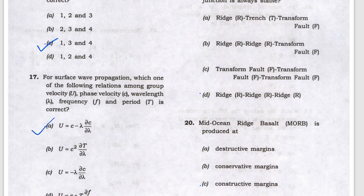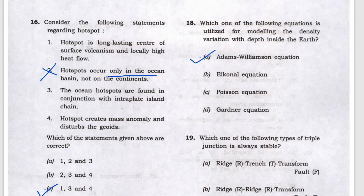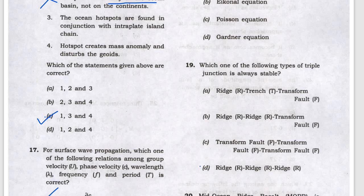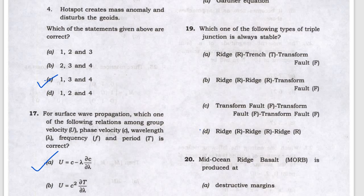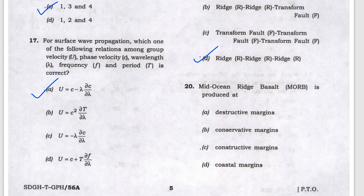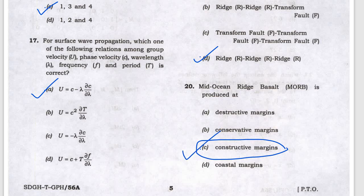Next, which equation models density variation with depth inside the Earth — this is the Adams-Wilson equation. Next, which is the stable junction — ridge-ridge-ridge (RRR). The mid-oceanic ridge is a constructive margin, so C will be the answer.